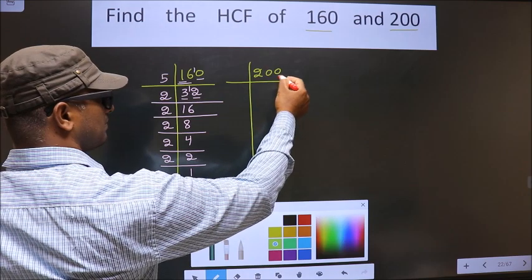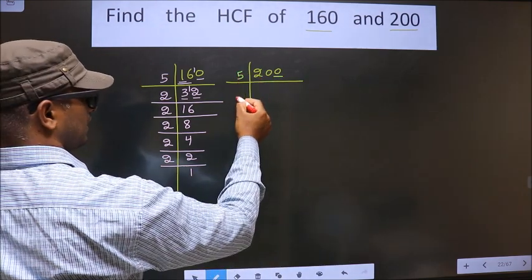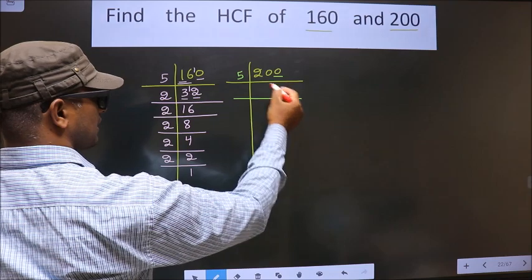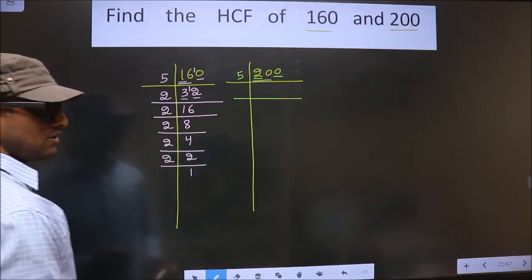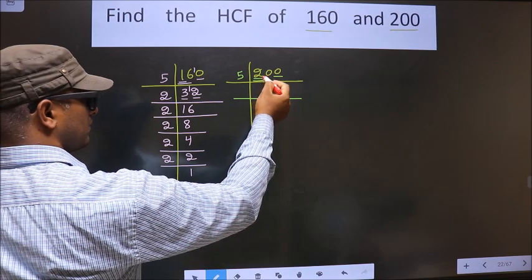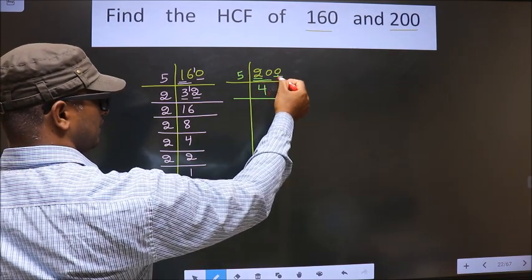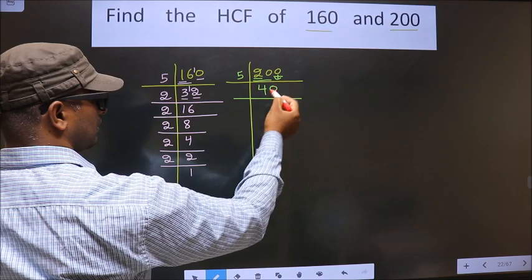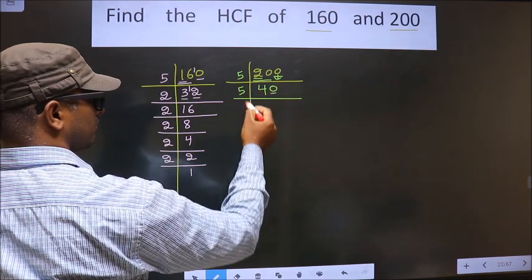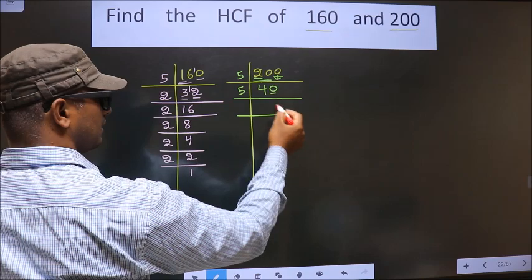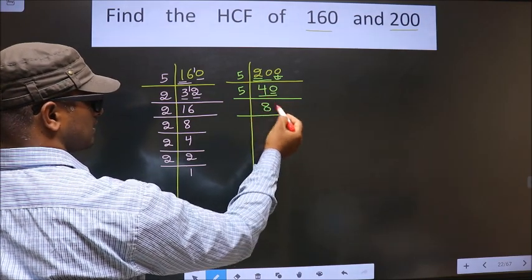Now for this number, the last digit is 0, so we take 5 here. The first number is 2, which is smaller than 5, so we take 2 numbers, that is 20. When do we get 20 in the 5 table? 5 times 4 is 20. This 0 is carried down. Now for this number, the last digit is 0, so we take 5 here. Here we have 40. When do we get 40 in the 5 table? 5 times 8 is 40.